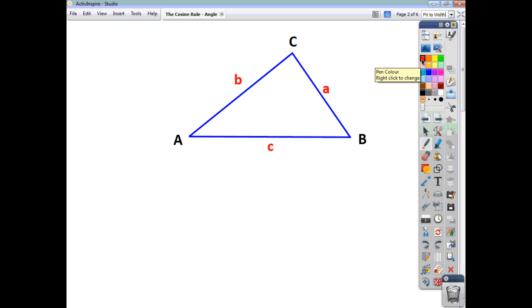You use the cosine rule to find a missing angle when you're given all three sides. Once you are given all three sides, you can find any angle you wish. The cosine rule says that cos of the angle A is b squared plus c squared minus a squared over 2bc.